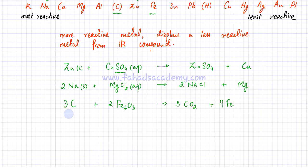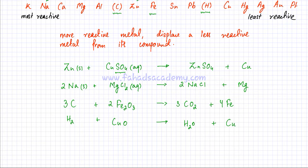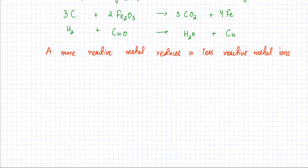We can do the same with hydrogen. Hydrogen is low in the reactivity series but still more reactive than copper. Copper usually forms copper oxide. Hydrogen, being more reactive, takes away all the oxygens from copper oxide, forming H2O — water. Copper is left alone and is displaced. So these are some displacement reactions: a more reactive metal displaces a less reactive metal.